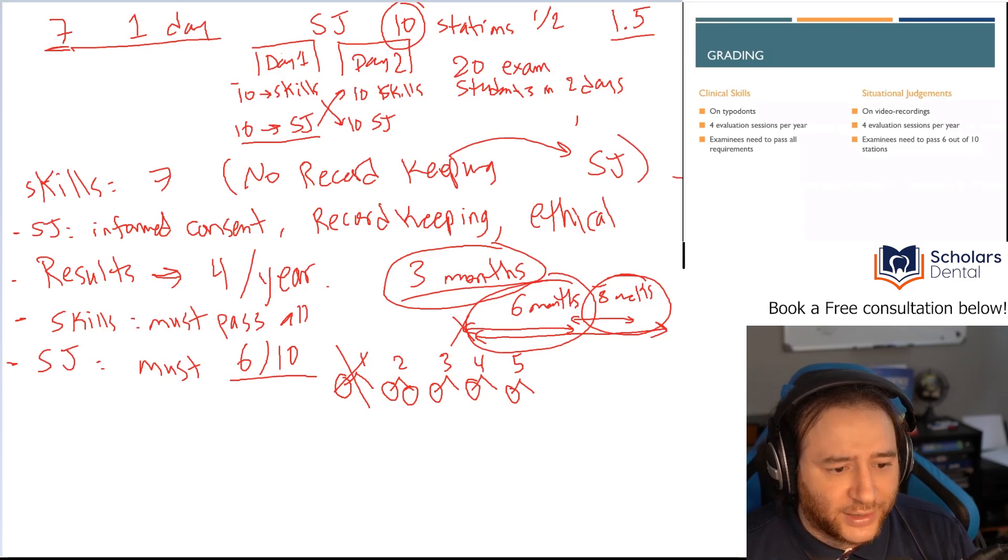Again, cannot fail two requirements in the same area. Remember, we said each area has two stations. You have to pass one of the two, and one station, you have to pass two of the two. Grading time is resource intensive. They're saying why they can't do it more than that. They need three examiners and calibrate to grade your work. Each requirement needs three. So they need 21 people minimum for evaluating the typodonts. They could do that four times a year, it will be released in a similar time frame as ACS. We'll just wait until they give us dates.